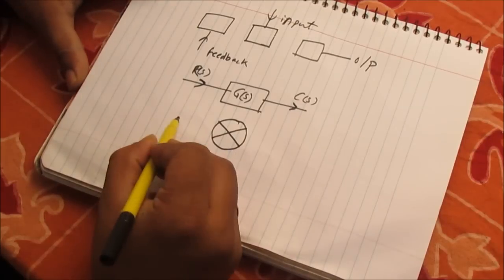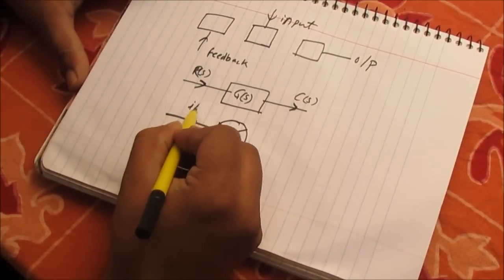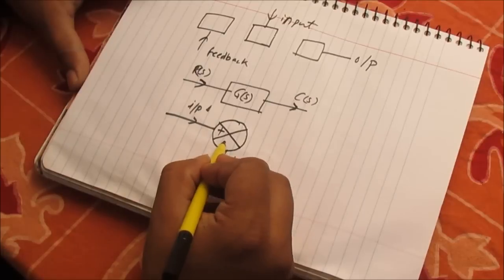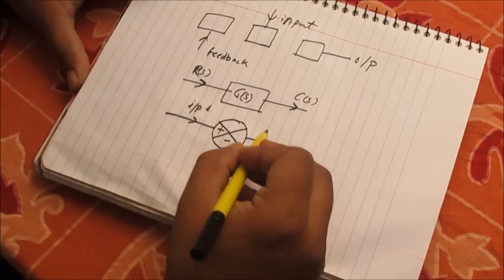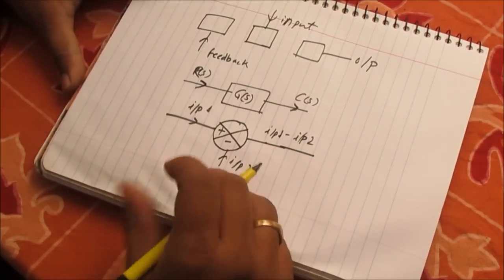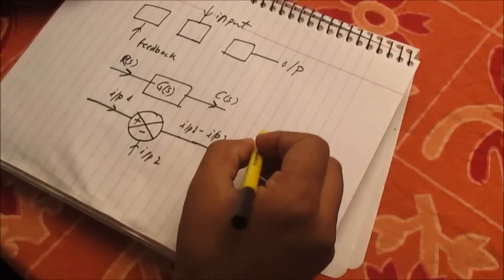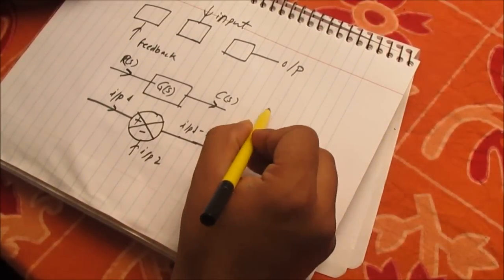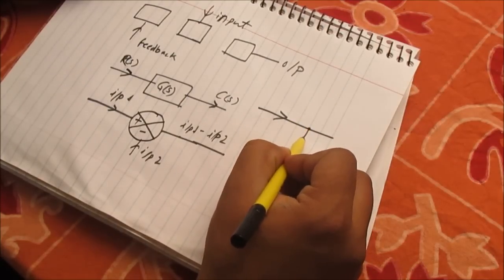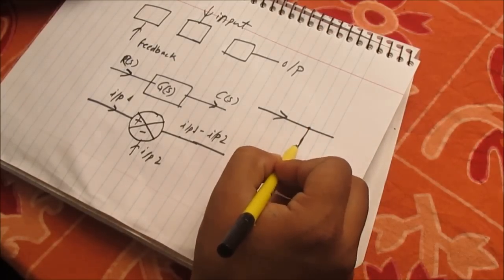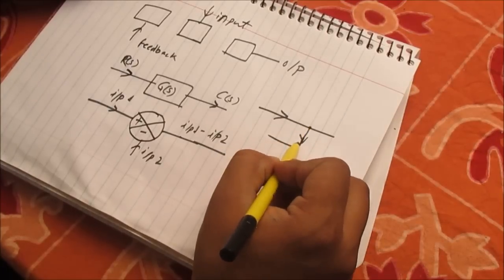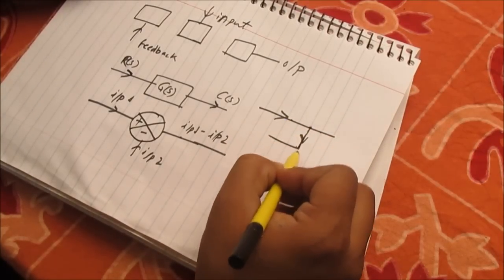We also use a summing amplifier where we need to add or subtract two signals. For example, with input 1 and input 2 — if one is plus and the other is minus — we get input 1 minus input 2. There is also a takeoff point: if my signal is here and I want to send it to a feedback system, I take a takeoff point whose value equals the original signal.